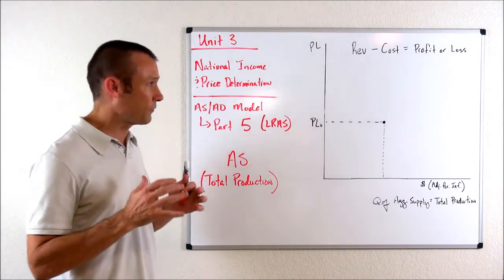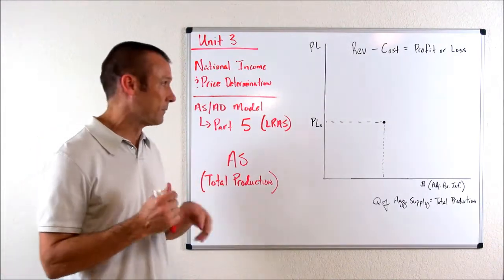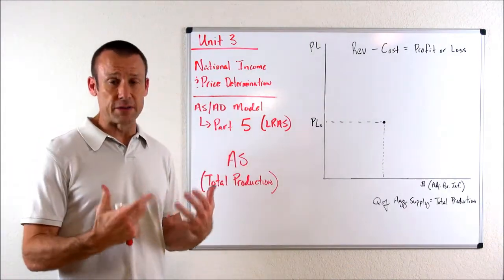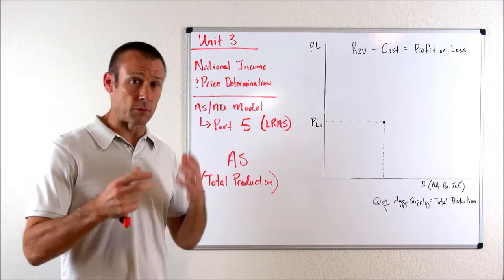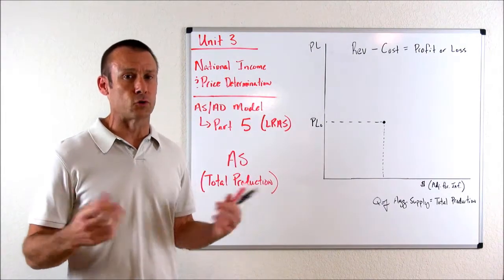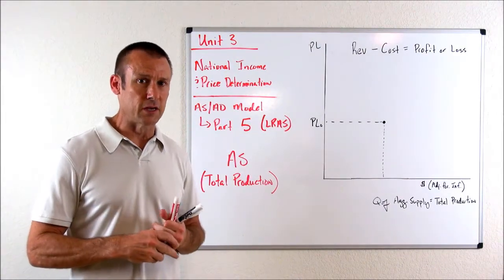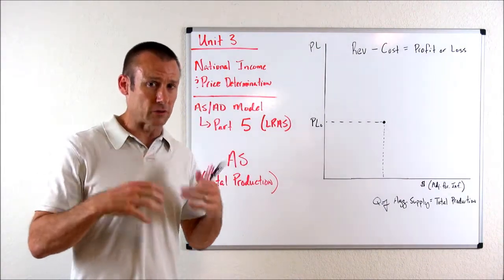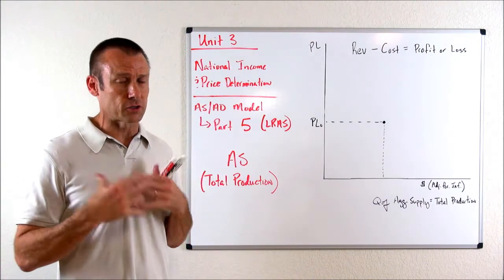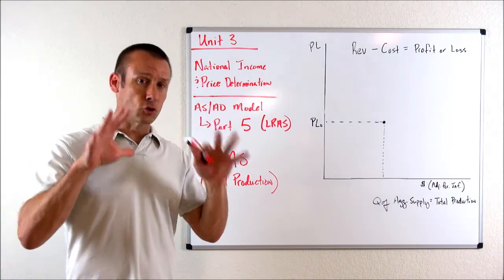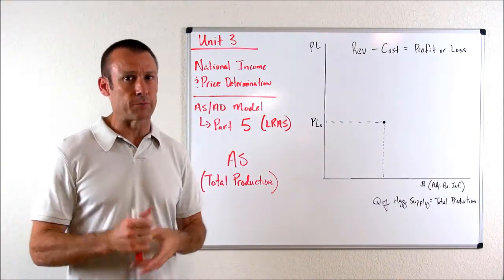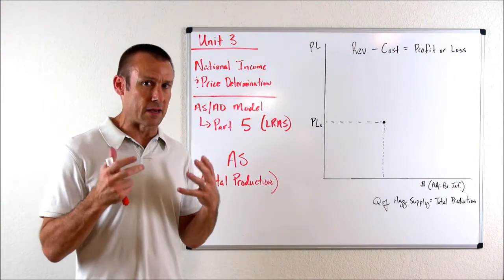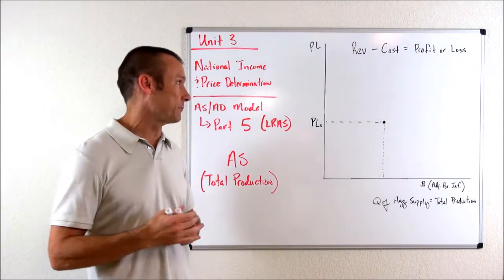What we're really talking about right now is the shape of the AS curve. Remember, there's two of them, and they have two different shapes. Our aggregate supply curves — our total production curves — there's two of them, and they both have different shapes, and we need to understand why they have different shapes.